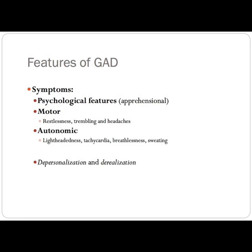There are several features of generalised anxiety disorder that are routinely described as free-floating anxiety symptoms. These are grouped into apprehensional, motor, and autonomic symptoms. The apprehensional symptoms include poor concentration, a fear of impending doom, feeling on edge, and often preoccupation with past or future events.